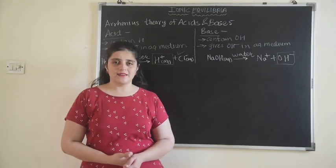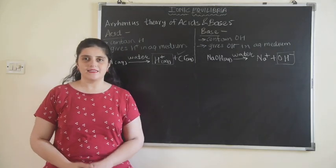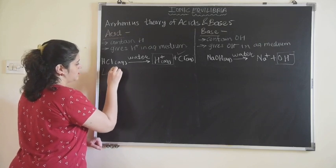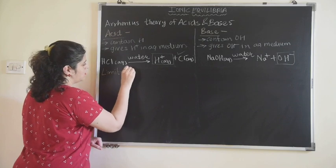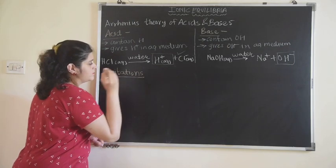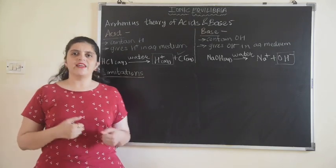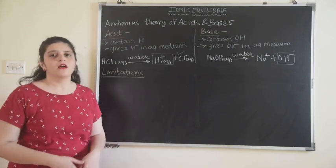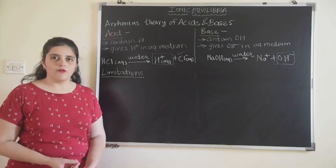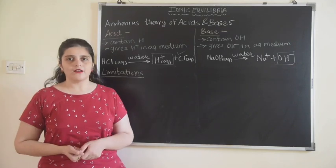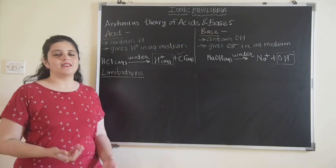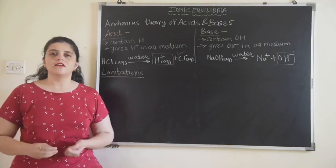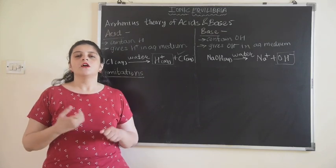Even after learning about Arrhenius acids and bases, we cannot say we have successfully defined acids and bases, because Arrhenius theory has some limitations. The very first limitation is that whenever we talk about Arrhenius acid or Arrhenius base, we keep saying aqueous medium — everything has to be dissolved in water. But what if some other solvent is used? If a substance is dissolved in a non-aqueous organic solvent, Arrhenius theory cannot tell us which one is acid and which one is base. So the first limitation is that Arrhenius theory only considers water as the solvent and does not talk about non-aqueous solvents.